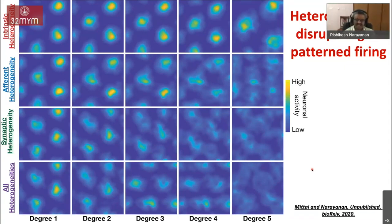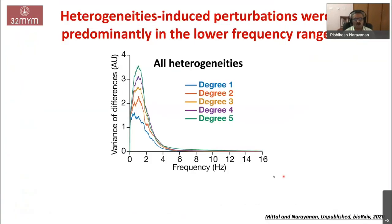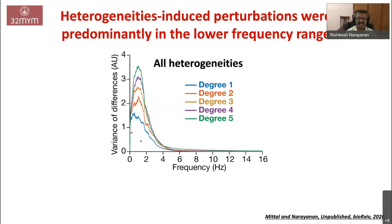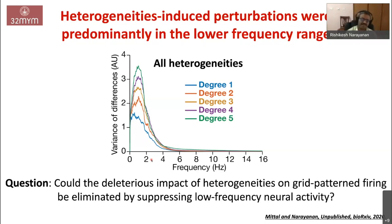The question he asked was: in a real biological system, all these heterogeneities are expressed together, so how is that system capable of generating grid patterns when the model with heterogeneities fails to do so? He then asked what exactly heterogeneities are doing and how they are perturbing the emergence of grid pattern firing. He found that heterogeneity-induced perturbations were limited to the lower frequency range.